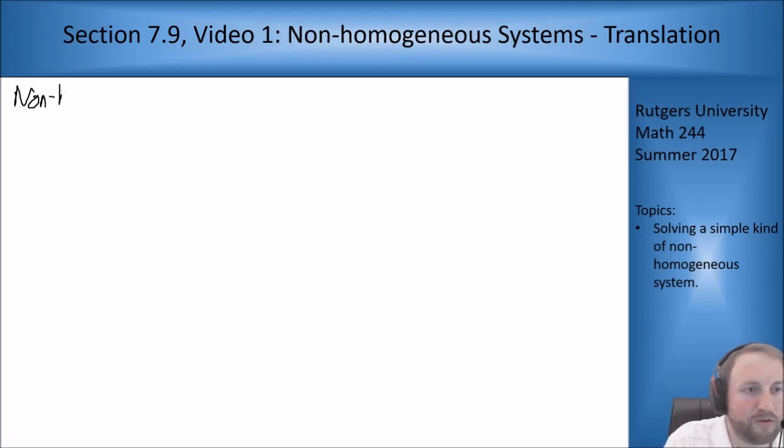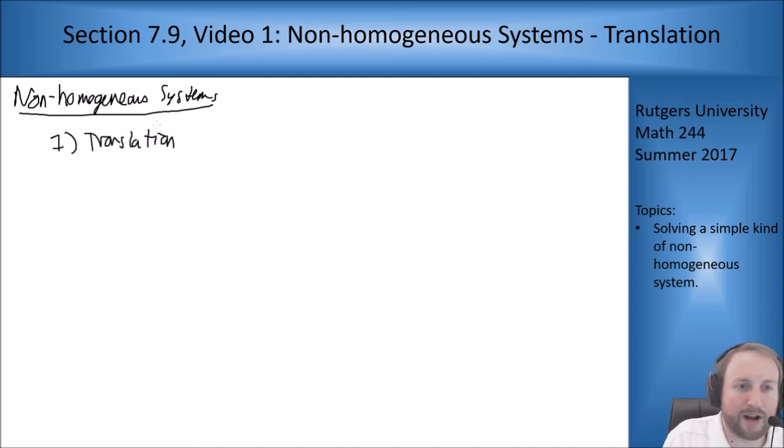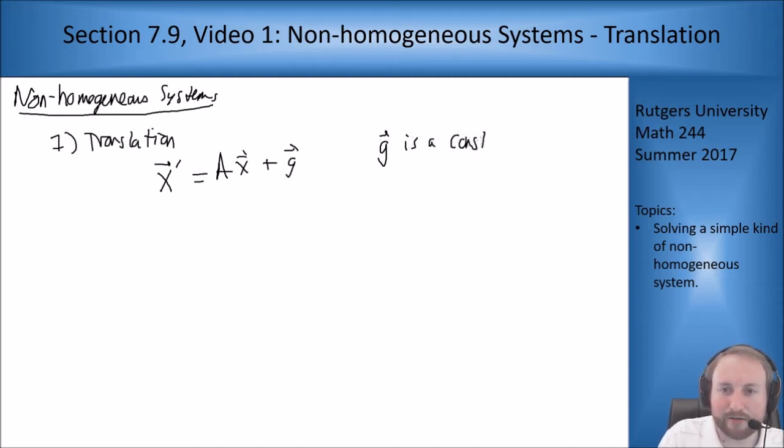So non-homogeneous systems, case number one is just translation. What I mean by translation is that I have x prime equals ax plus g. Now a can depend on t if it wants, but g is a constant vector.